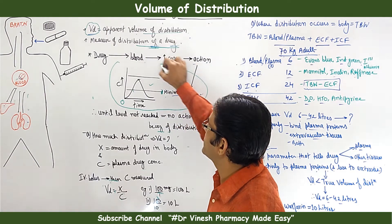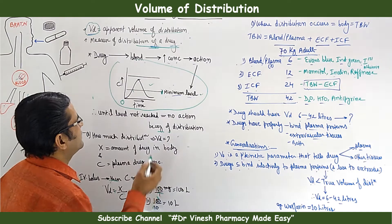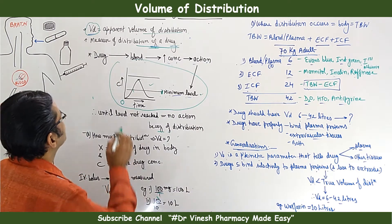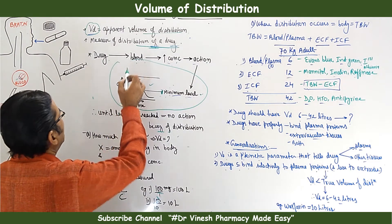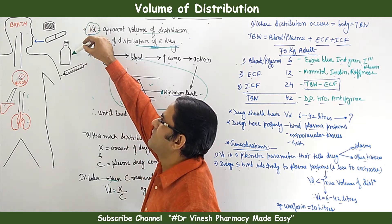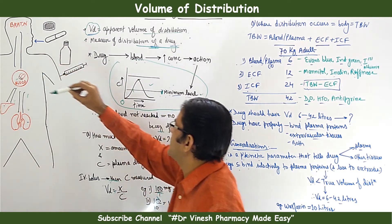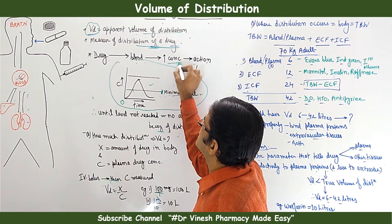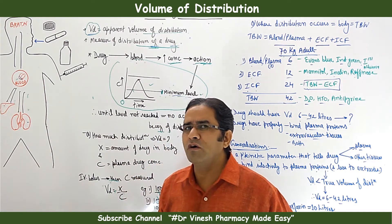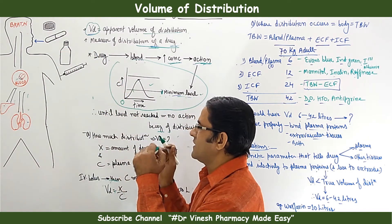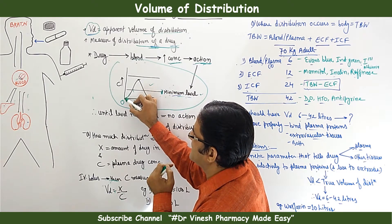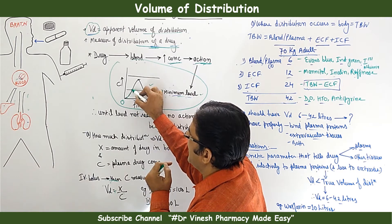Let us look at the basic plasma concentration-time graph. Until a minimum level of drug concentration is reached in plasma, the drug will not show its pharmacological response. The drug is taken via different routes — solid, liquid, or parenteral — it reaches the blood, and after reaching the blood, concentration increases. When the minimum level is achieved, action is seen.